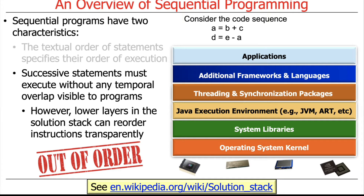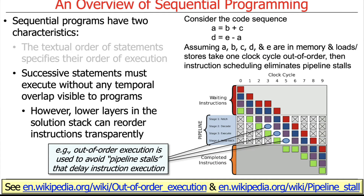However, lower layers in the solution stack can reorder instructions transparently, as long as it doesn't affect the outcome of the program. Most processors now have instruction pipelines, and the code that actually executes can be reordered to make the pipeline avoid stalls — bubbles where nothing is getting run because an execution took too long. For example, assuming A, B, C, D, and E are in memory and loads and stores take one clock cycle, instruction scheduling can eliminate pipeline stalls.